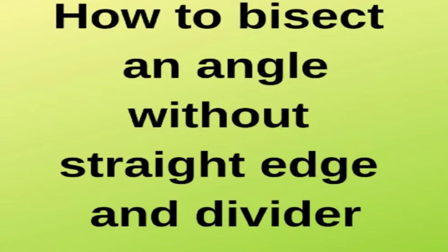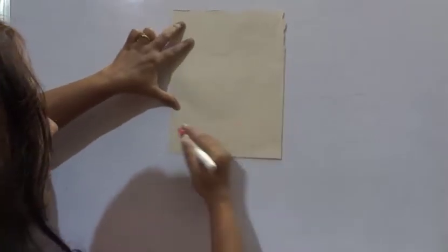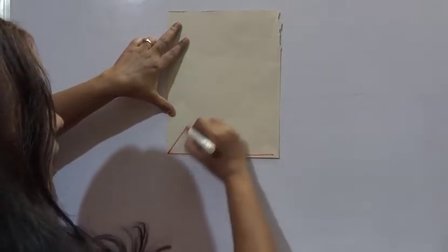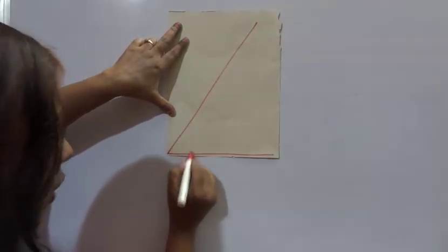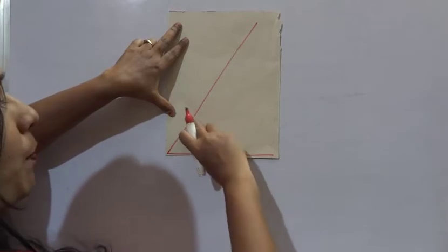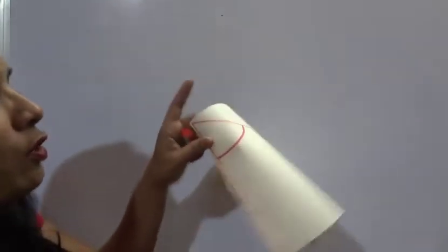Can you bisect an angle on a piece of paper? Let us try. Here you can consider this line. We make a baseline here and this is a straight line joining the baseline. Here we have got an angle. Now we have to bisect this angle. To bisect this angle, you just fold the paper.